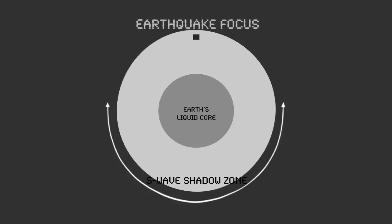S waves, or shear waves, are one of two main types of seismic waves, vibrations produced by earthquakes. The waves travel through the earth's interior and can be measured at the earth's surface with sensitive detectors.